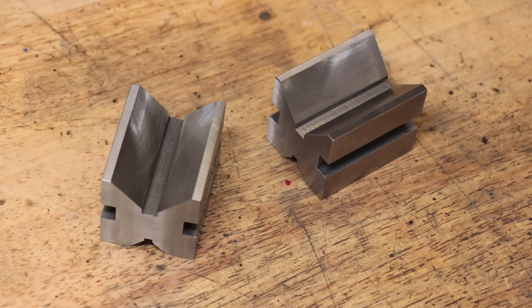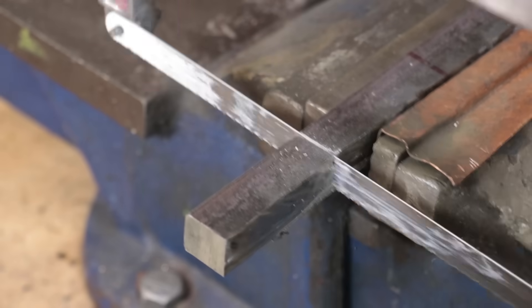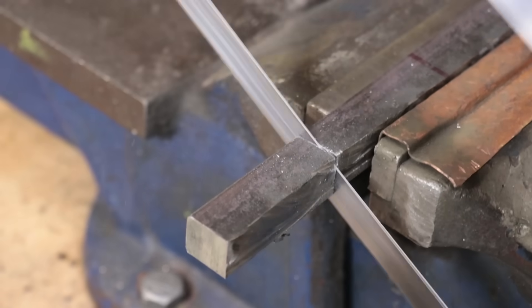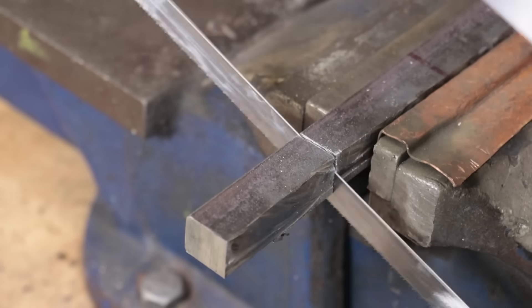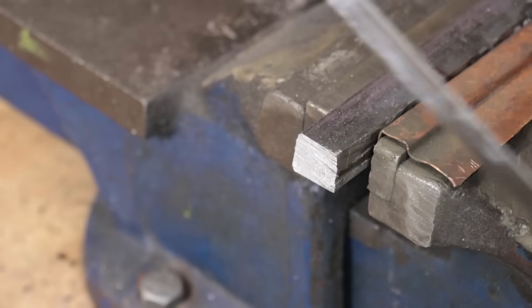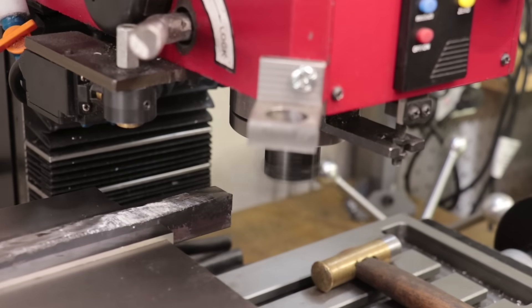The final thing that I need to make are a set of clamps to hold the parts in the V-block. Now I think the best course of action would be to get these CNC cut, but since I have a forge, I might as well try some blacksmithing and see if I'm any good at it.